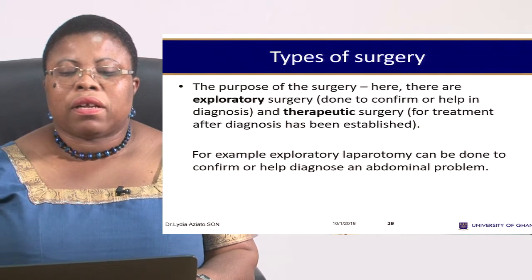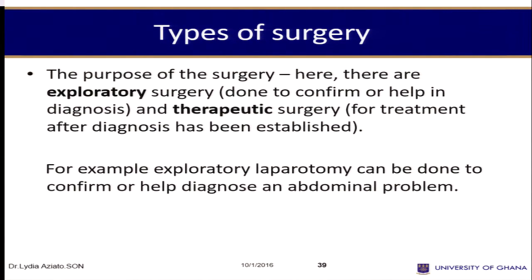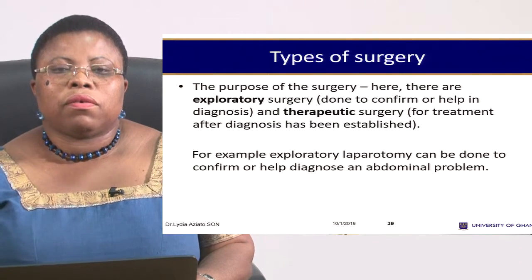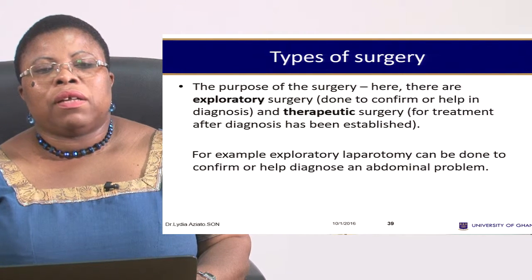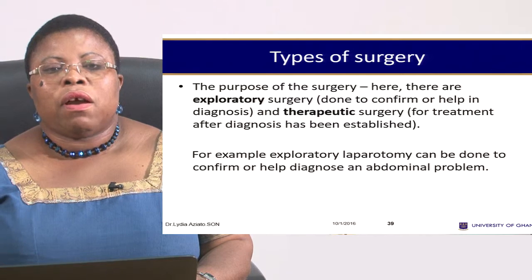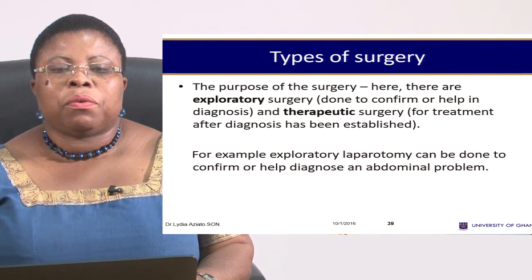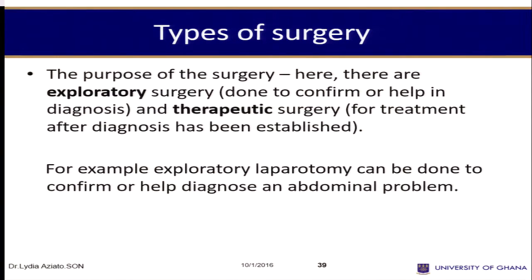We also classify surgery as exploratory, therapeutic, reconstructive, palliative, etc. The first three relate to urgency and purpose. Exploratory surgery means you don't know what is wrong, so you open up to check. Therapeutic surgery means you are treating — for example, removing the appendix, or removing part or all of an enlarged thyroid gland with high thyroid hormone levels.